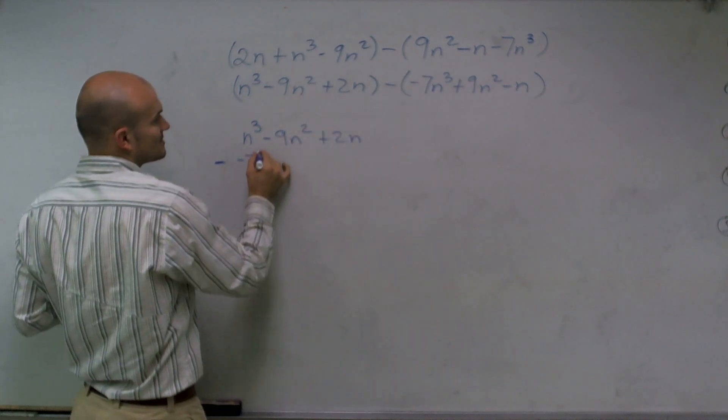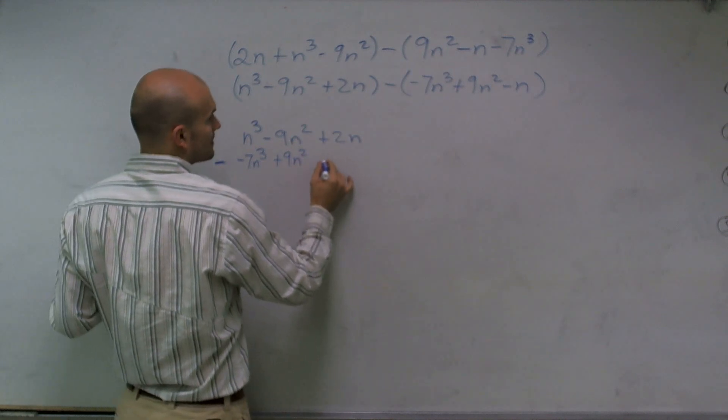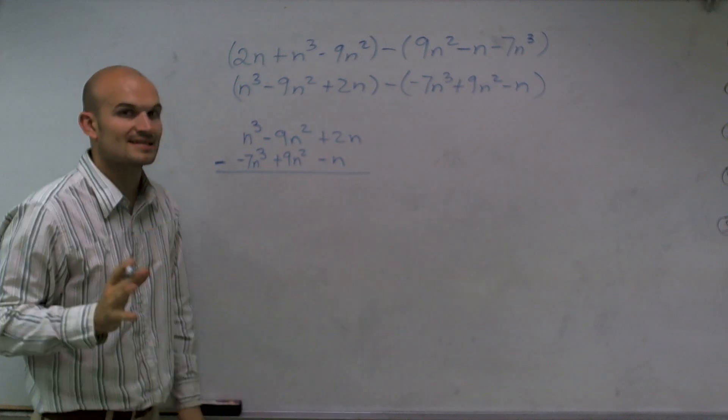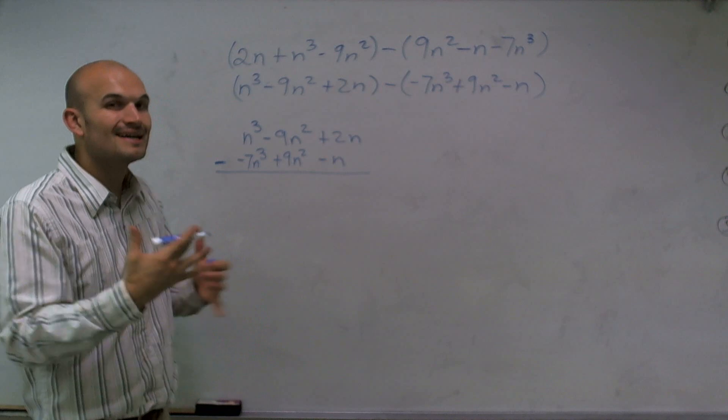which is a negative 7n cubed plus 9n squared minus n. Now the reason why I said a lot of students sometimes will make mistakes is when you're doing this method, you have to make sure of what you're doing, you kind of see it out loud.